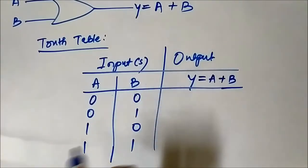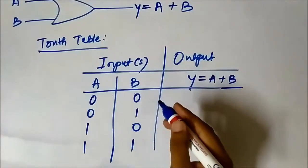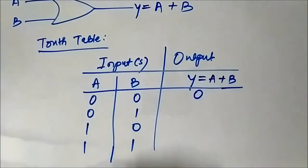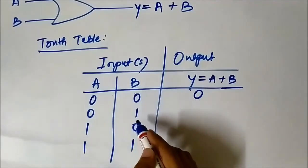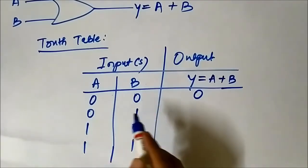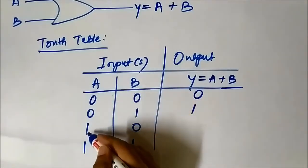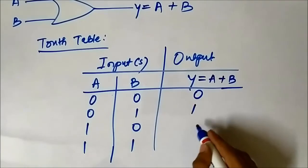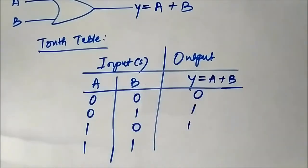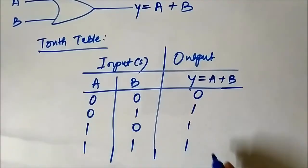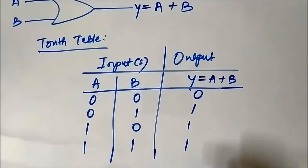When both inputs are 0: 0 plus 0 is 0. When A is 0 and B is 1, the output is 0 plus 1 which is 1, as per binary addition rules. When A is 1 and B is 0, then 1 plus 0 is 1. When both A and B are 1, the output is 1 — because in Boolean algebra, 1 plus 1 equals 1, unlike regular binary addition where it would be 0 with a carry.